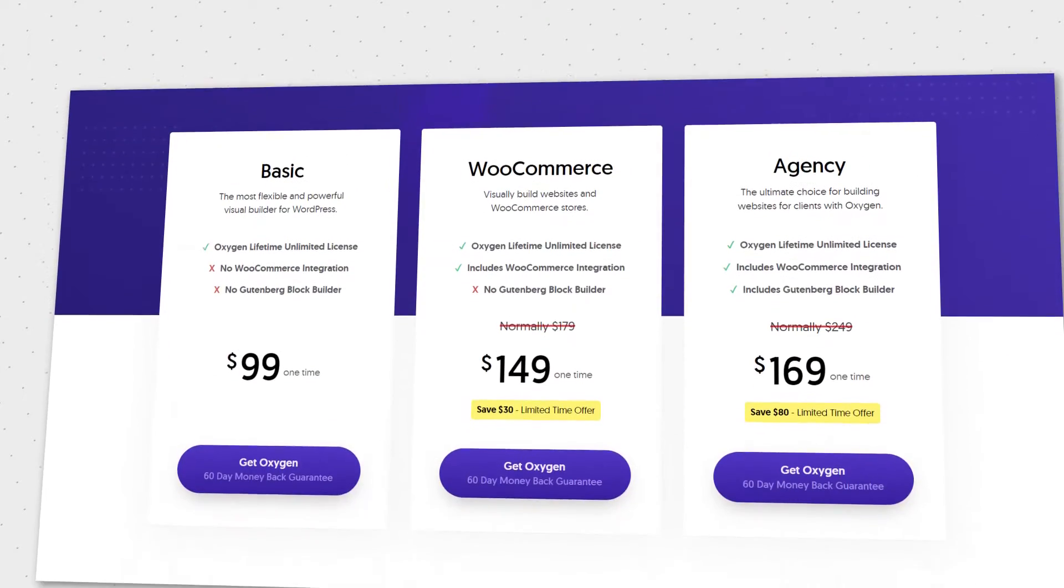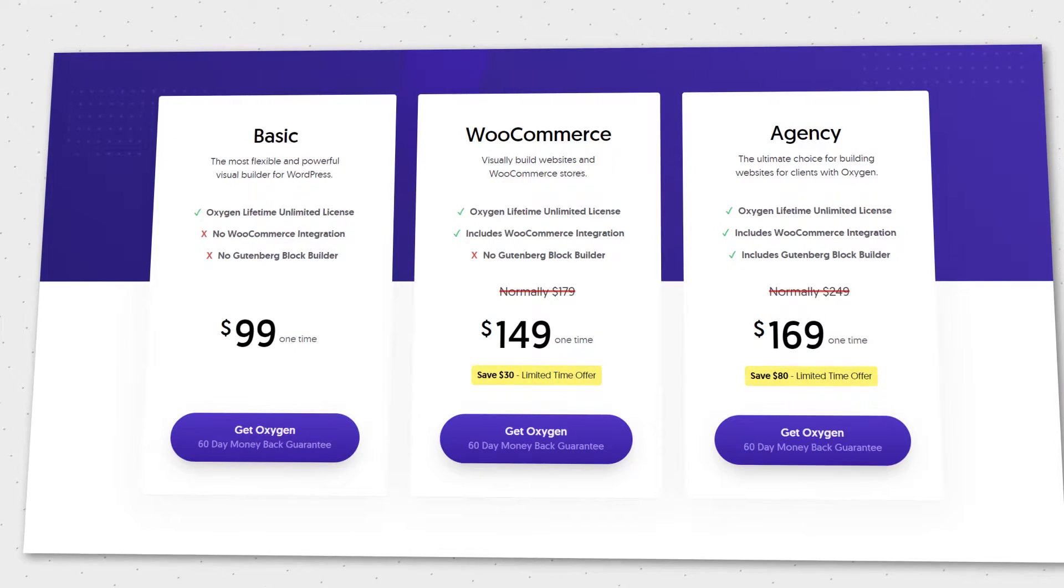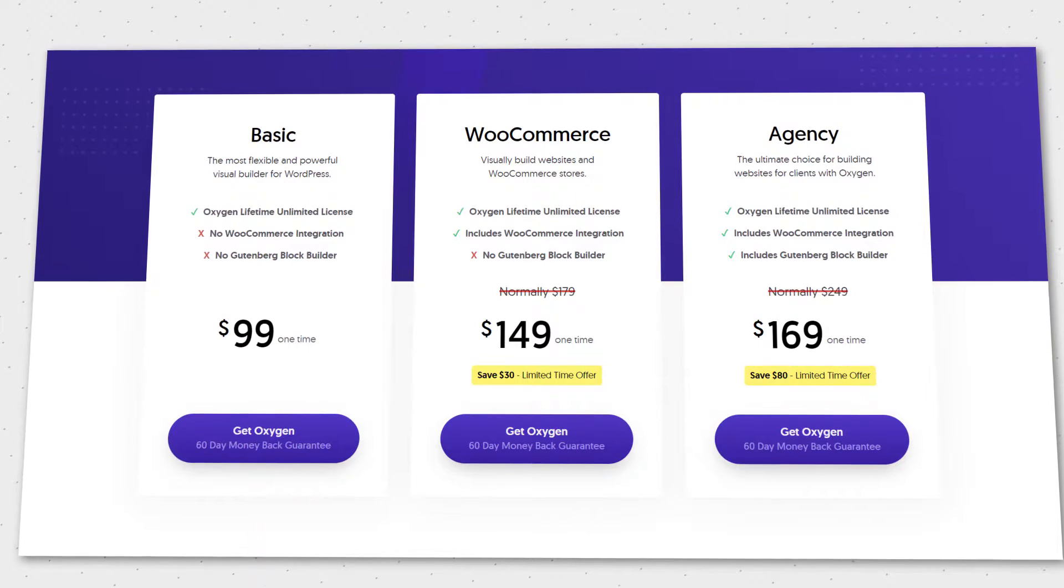The builder also includes a big library of responsive design sets you can use to build your clients' websites on, but be careful because not all of them are compatible with all of the website themes out there. Also, Oxygen is pretty expensive considering the market of builders in its current state. You pay $99 to $169 for lifetime use, so if you do decide on it, make sure that you'll be using the full capacity of this tool.